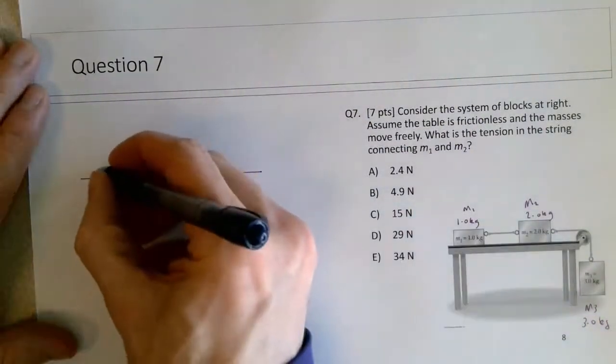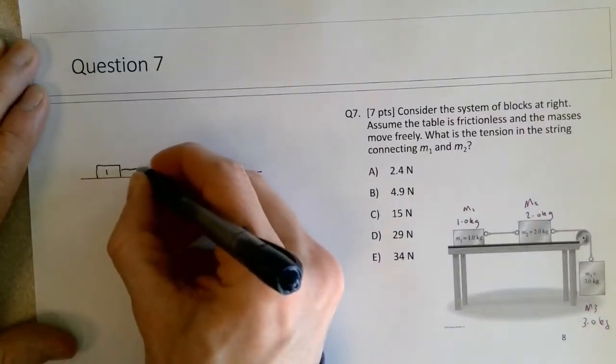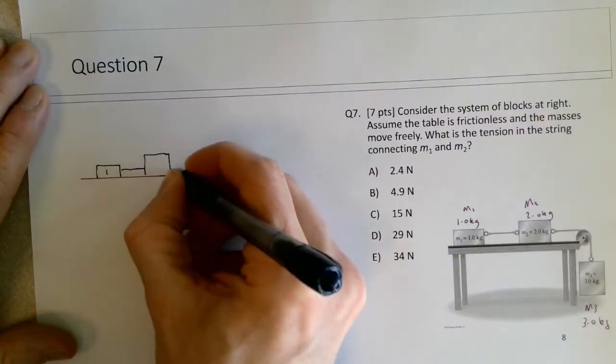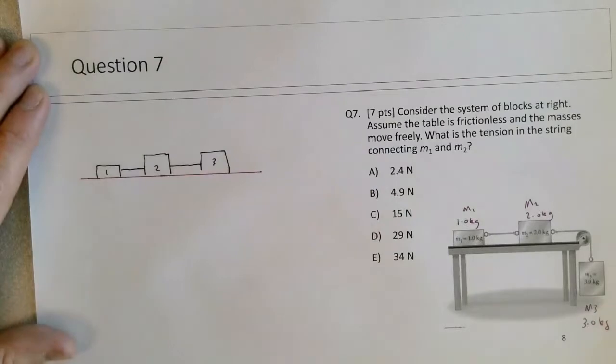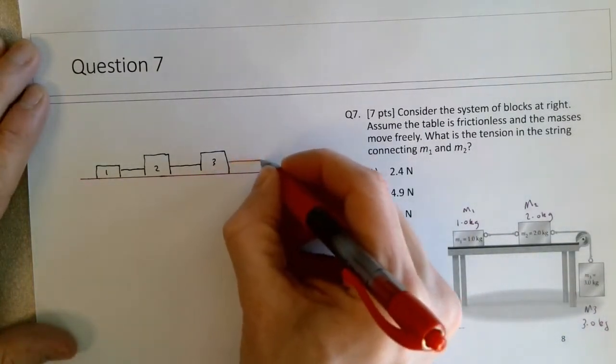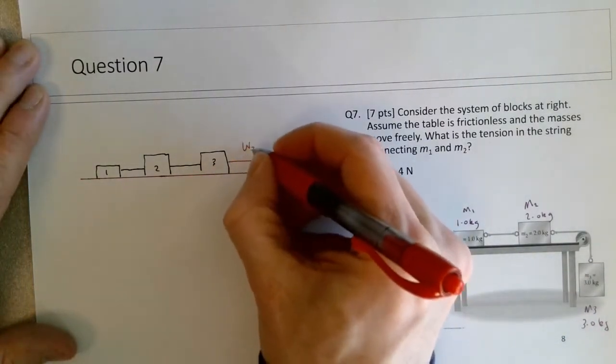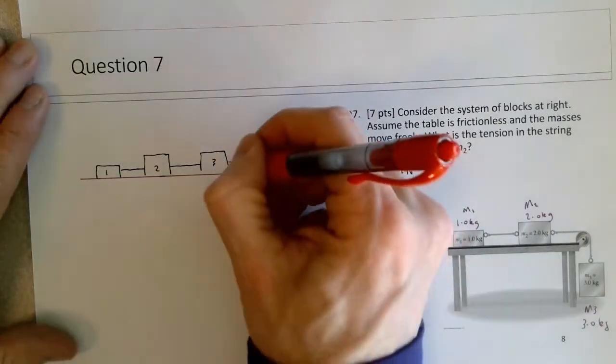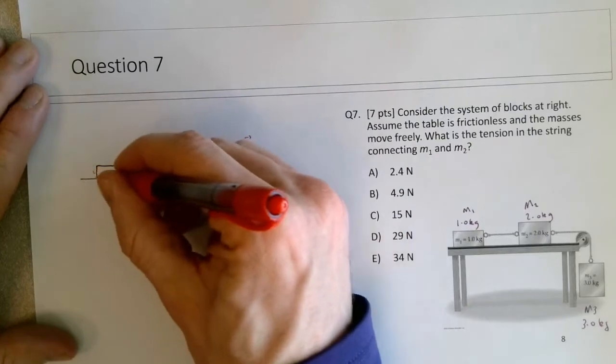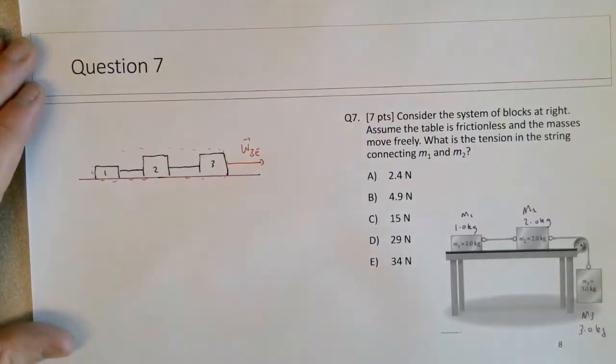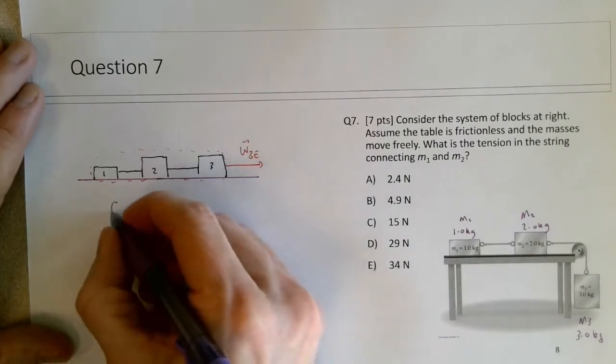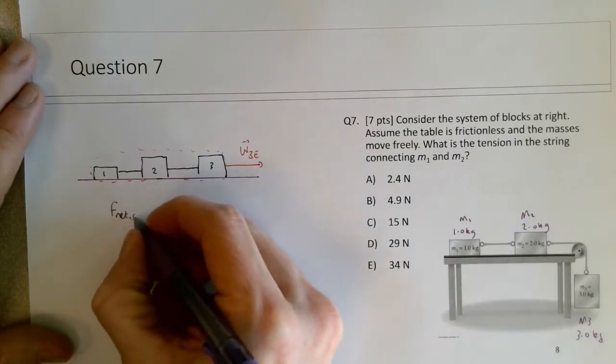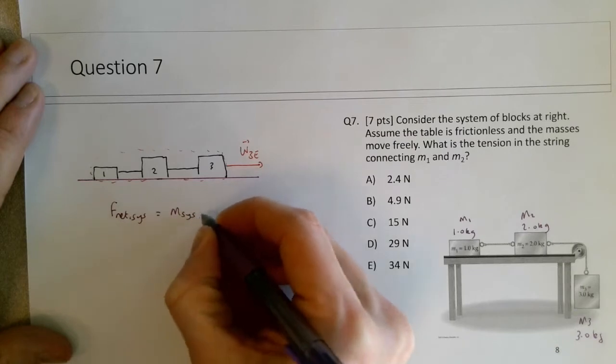That's one, two, and three, and the only thing that's driving this whole system is a force here on the three that's equivalent to the weight force on the three by the earth. So what's pulling the system of the three blocks is that weight force that's acting on the M3 block.